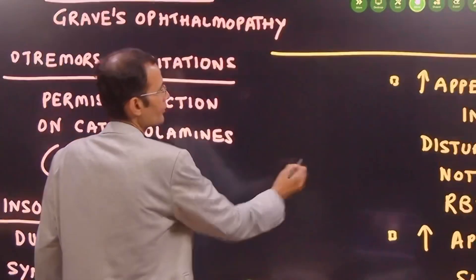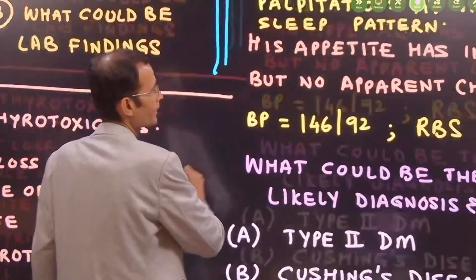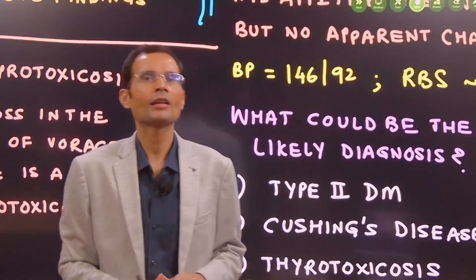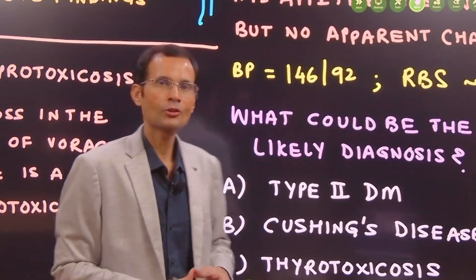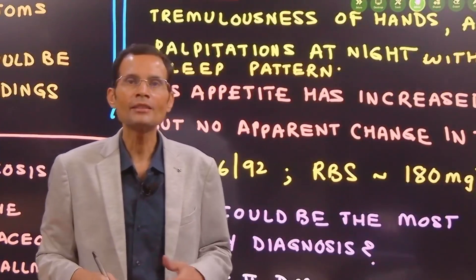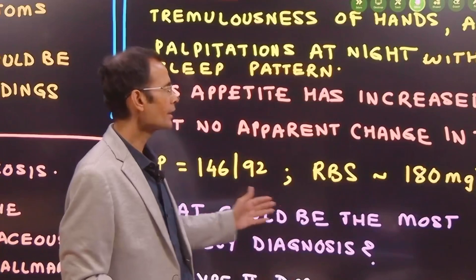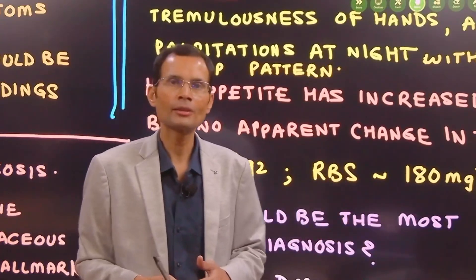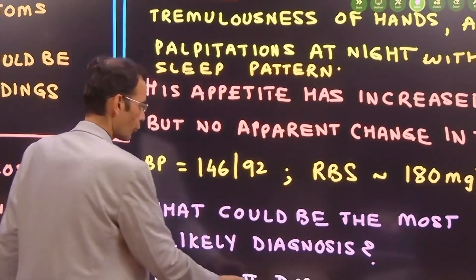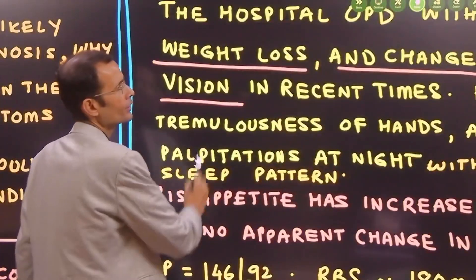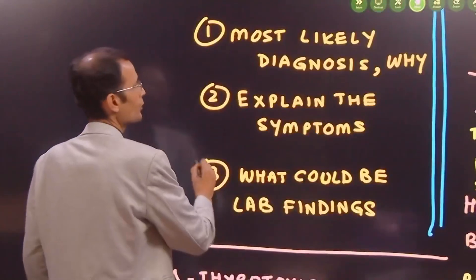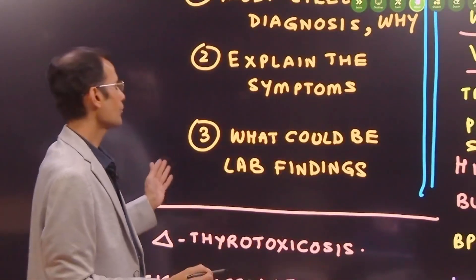So, that was the case for discussion. Any other point that is a pointer, blood pressure is borderline elevated. Again, an effect of the permissive action on the catecholamines. Blood sugar has increased. That is because of the increased metabolic rate and increased carbohydrate metabolism that can increase the blood glucose but not as much as a frank diabetes. So, therefore, that was the explanation to the manifestations of this patient. And these questions can be asked for 10 marks where you got to explain the symptoms.